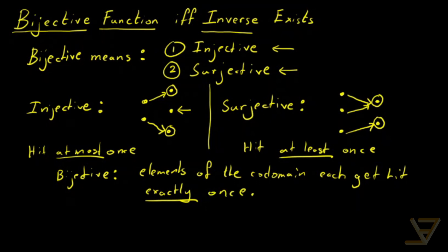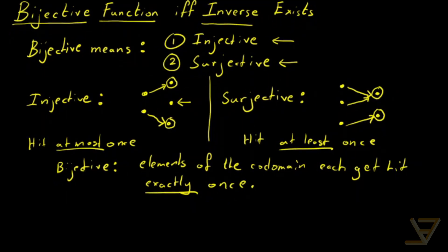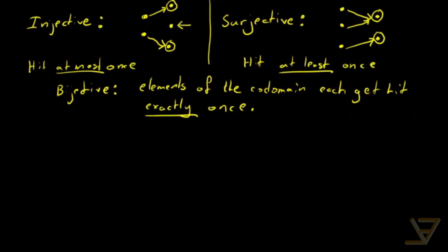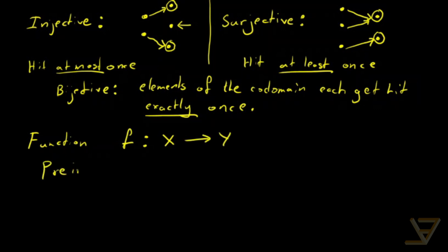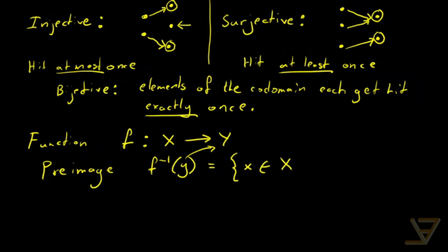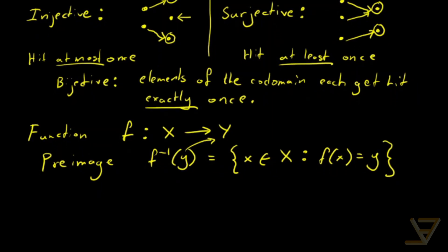So over here we have 'hit at most once' and here we have 'hit at least once.' If you put them together, you get that bijective functions are those functions where elements of the codomain each get hit exactly once, because 'at least once' and 'at most once' come together to mean 'exactly once.' We can make this more formal using the language of pre-images. Let's say we have a function f going from X to Y.